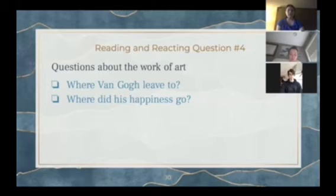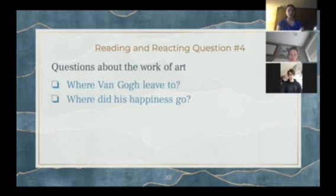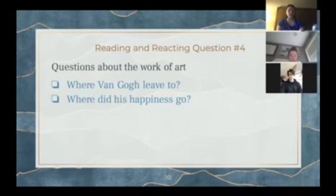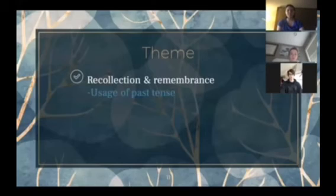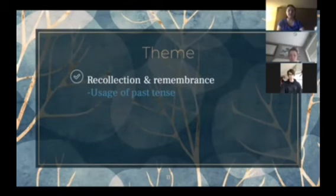For reading and reacting question number four, the poem describes the bed as empty and refers to a memory of happiness. This insinuates that the owner, Van Gogh, has left and has been gone for some time, or at the very least the positive emotions he once felt in the past are gone. Where has he gone? And if he still sleeps in the bed, why are there only memories of happiness? The overall theme of the poem is reflection and recollection. The way the poet describes the bed is as if she's recalling events that have long since passed — there's nothing now but the bed and the memories it once held.